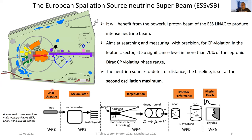The project is divided into seven working groups. WP1 is organizational, and each working group is responsible for one part: the linac upgrade, the accumulator and hydrogen collector, target station facility, detector performance, and physics reach. Recently, a working group for civil engineering and safety was added.